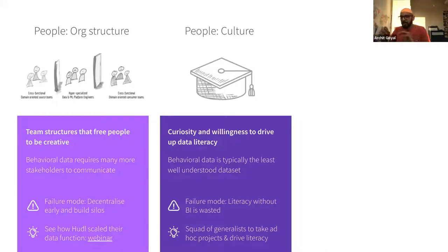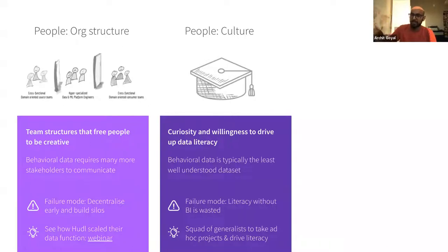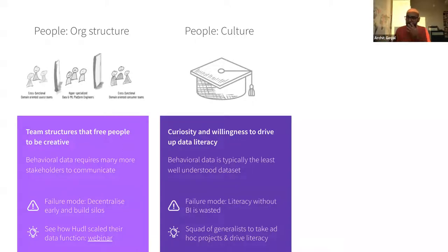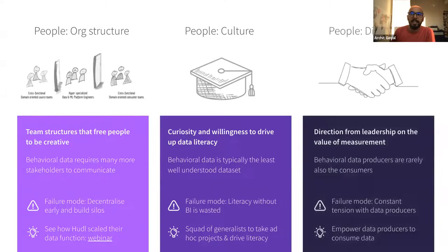Something I've seen companies do is build up a squad of generalists — when you start moving from point A to point B. At point A you tend to have data generalists doing everything and delivering marketing attribution to the business. At point B you've got the business trying to self-serve on sophisticated things with data. If you've got generalists going around the business helping data consumer teams to drive value with data — going to marketing to help with a marketing attribution model, then going to a product team to help with an embedded analytics portal — that's really powerful because it builds literacy across those teams. Those generalists can be incentivized on literacy rather than the ROI of the data project.